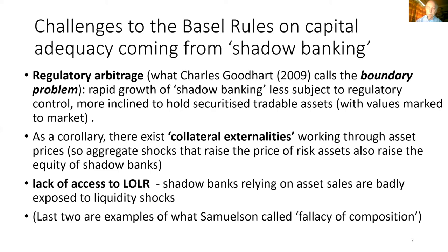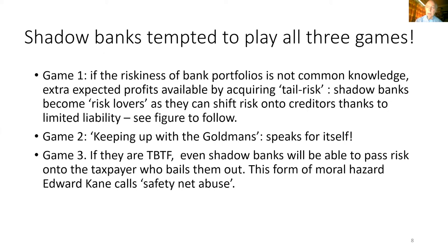The thing about shadow banks is they like to play all three games we just talked about. Game one: if the riskiness of bank portfolios is not common knowledge, they can get extra profits by taking on tail risk. Shadow banks become risk lovers because they can shift risk onto creditors thanks to limited liability. Keeping up with the Goldmans — that's all about shadow banks. Game three: if they're too big to fail, even shadow banks will be able to pass risk on to the taxpayer — what Edward Cain calls safety net abuse.